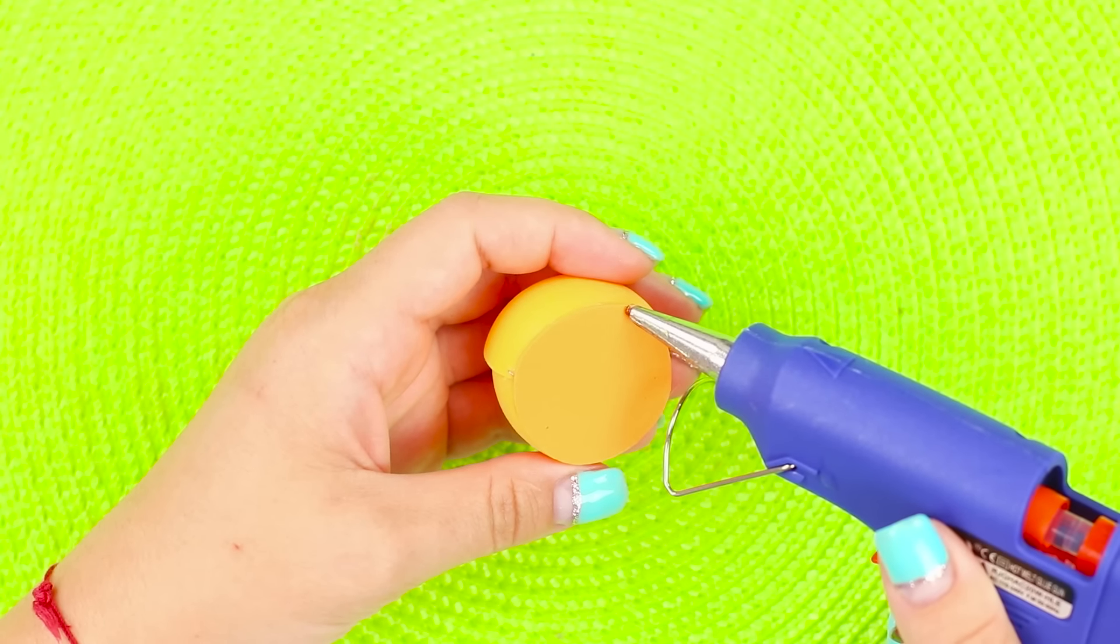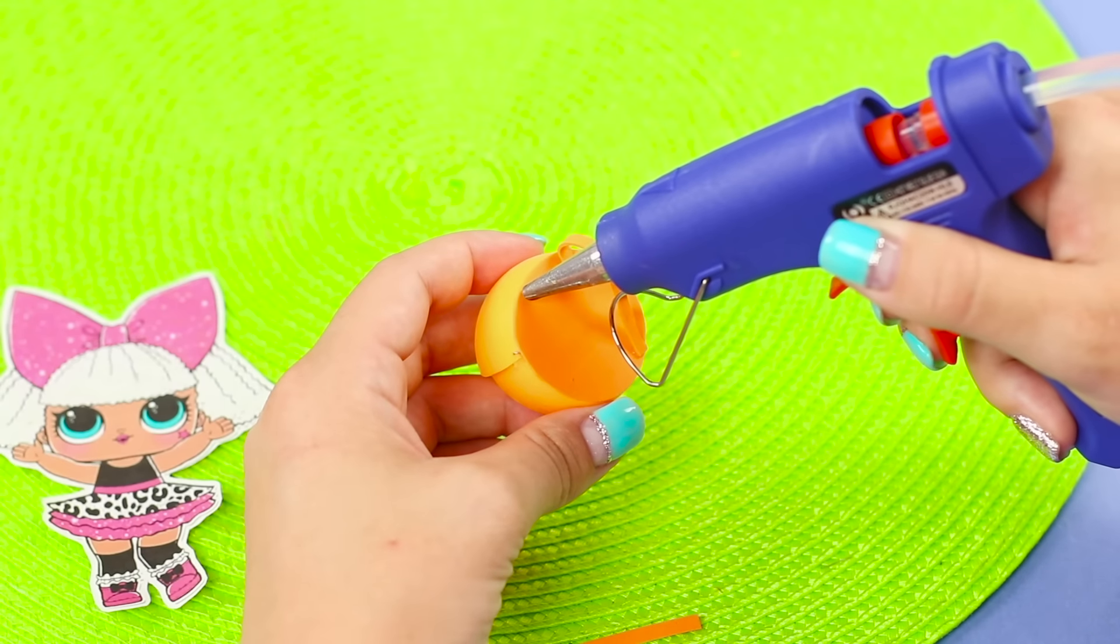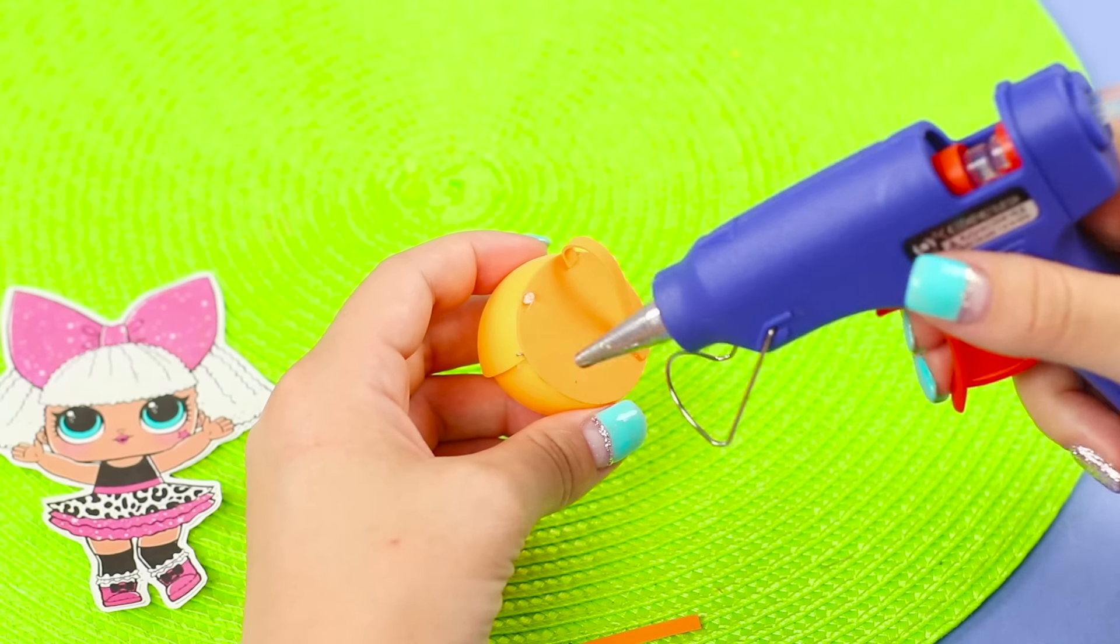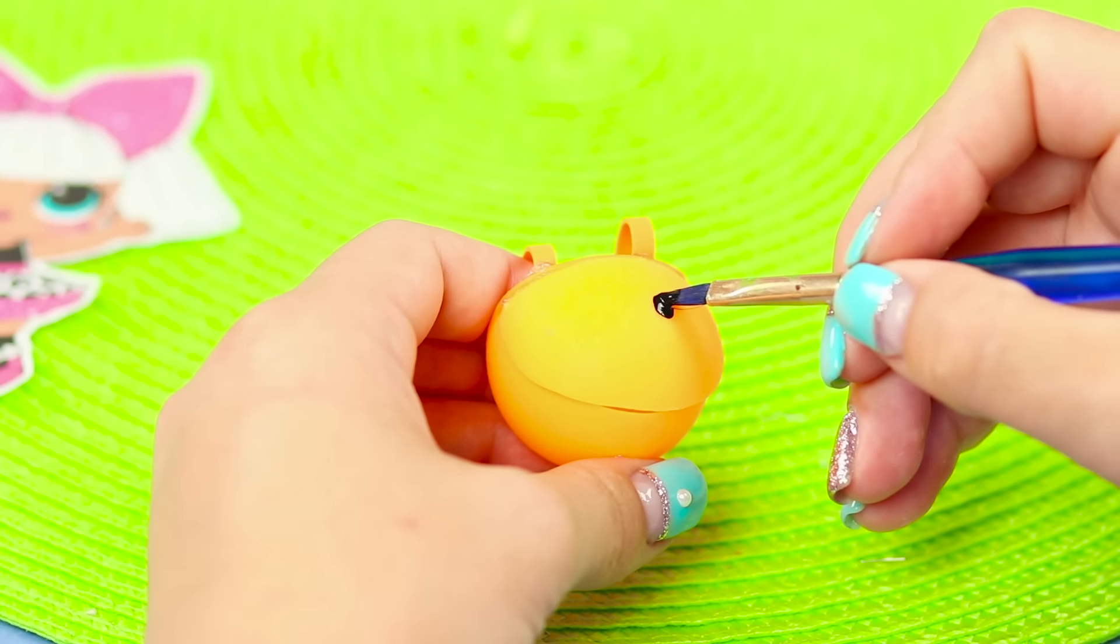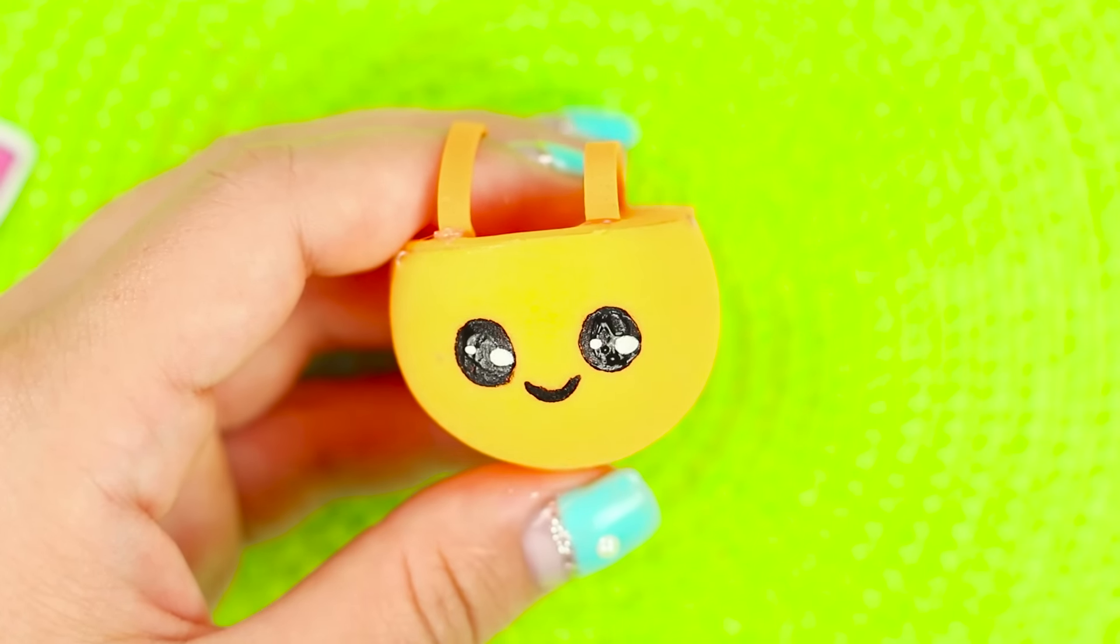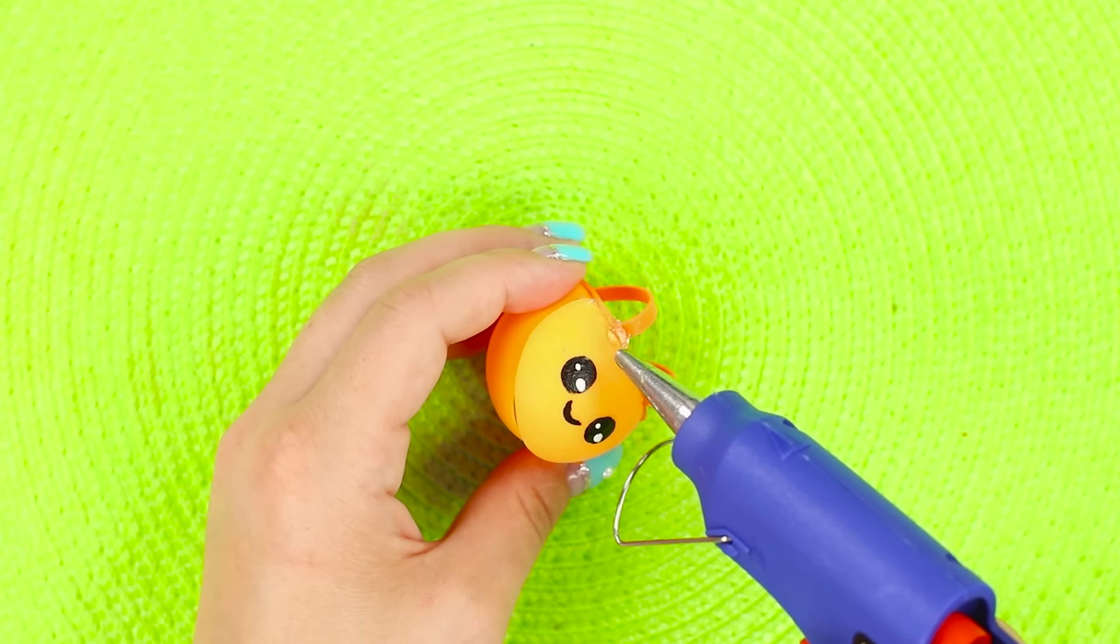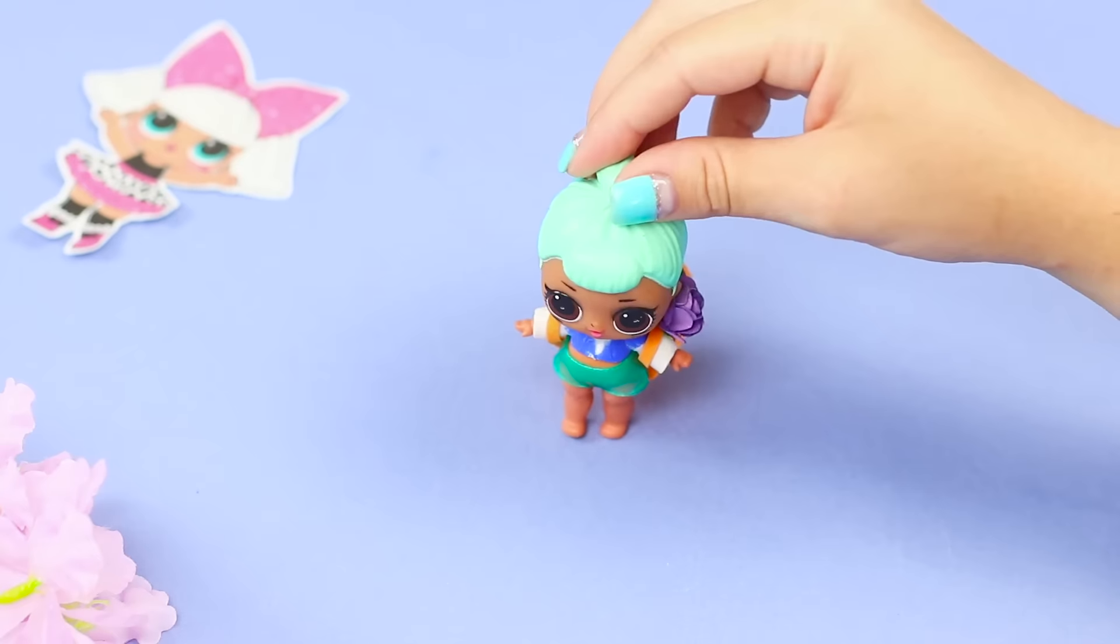Cover the cut with foam paper. Next, glue some elastic bands to the foam paper. Those will be the straps. Draw a pretty face on the cap. Decorate it with flowers.